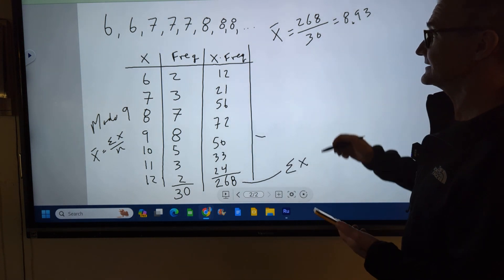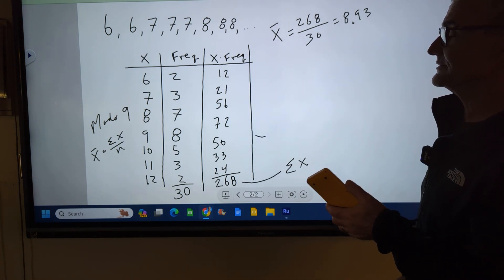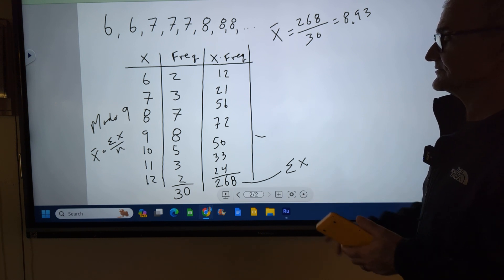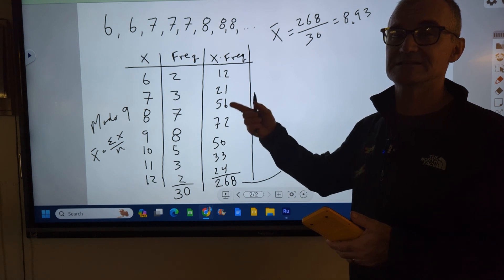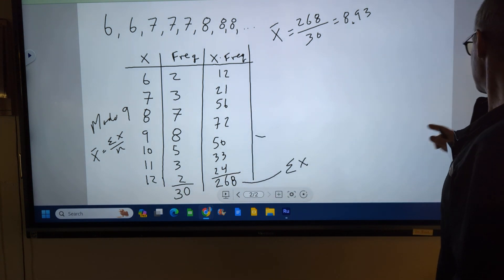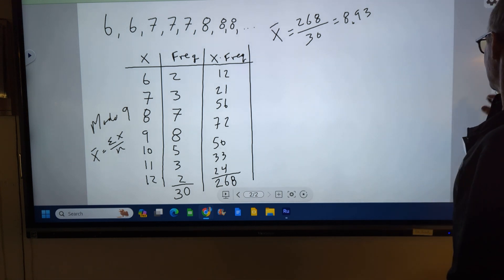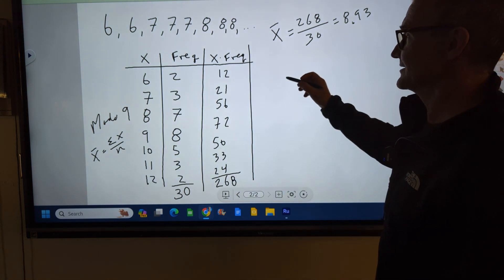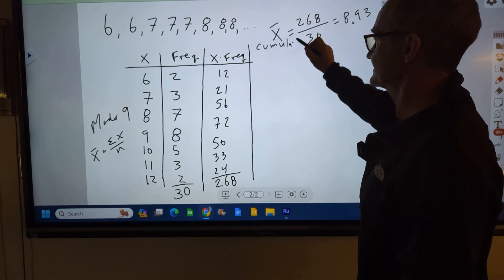My mode is 9. And then I got to find my median, my middle value. So if I have an even number of values, it's going to be my 15th and 16th value. This is actually a little difficult. I don't know why. Maybe it's intuitive. But I'm going to create a new column called cumulative frequency.